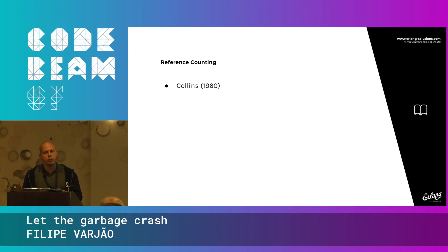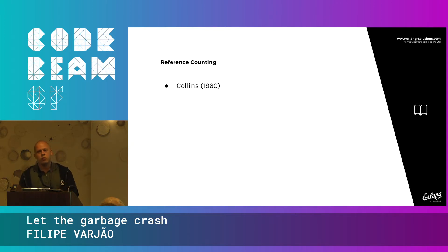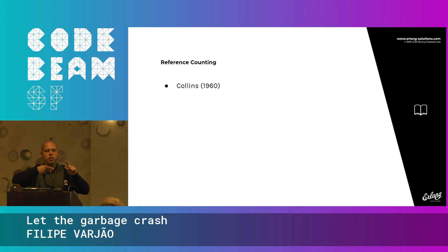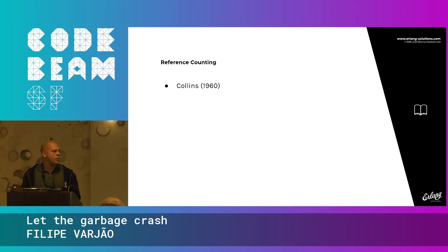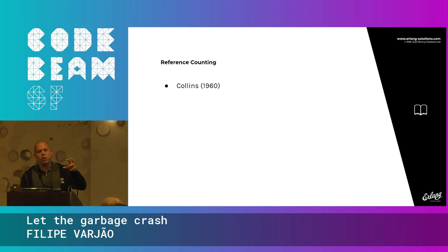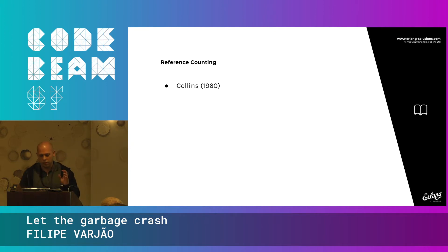Another technique is reference counting. Let's cover the main ones and then go to the results. Reference counting is the most simple: you basically keep a reference counter for each object in memory. Each time someone points to that position, you increment the counter; when you no longer need it, you decrement it. But if you look carefully, you're consuming more memory, because you have the object itself on the heap and also this counter allocated alongside it.